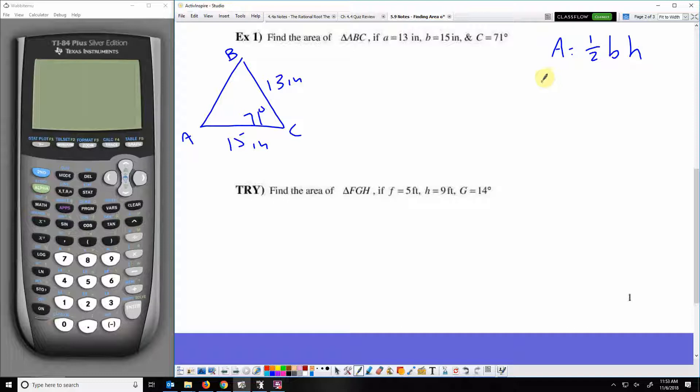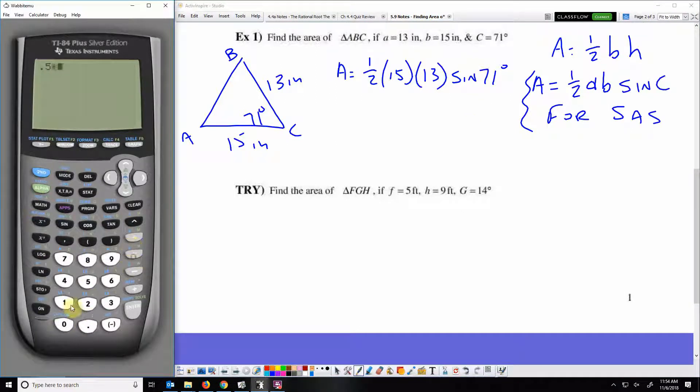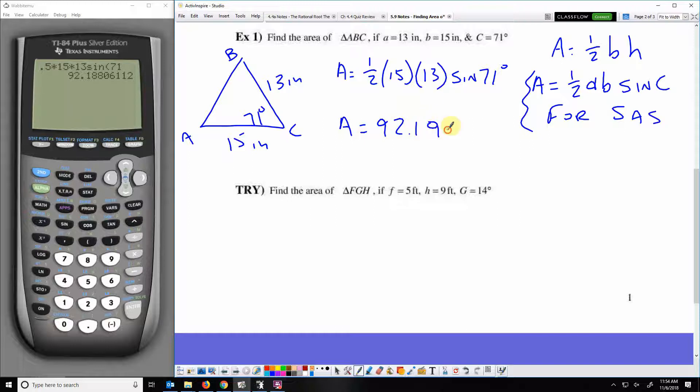There is another formula that says that the area is one-half AB sine C. So when you have side-angle-side, this right here is for times when you are given side-angle-side. That's two sides and the angle between them. To find the area, I can do one-half times 15 times 13 times the sine of the included angle. So half times 15 times 13 times sine 71, and that gives me the area of the triangle. The area is about 92.19 inches squared.